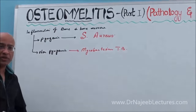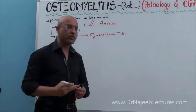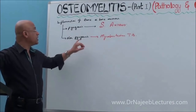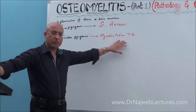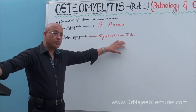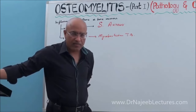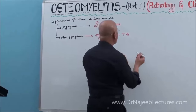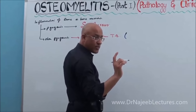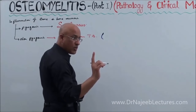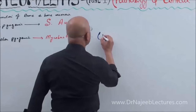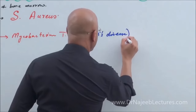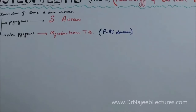The most common organism producing pyogenic osteomyelitis is Staphylococcus aureus, and the most common organism producing non-pyogenic osteomyelitis is Mycobacterium tuberculosis — although fungi can also produce osteomyelitis. When Mycobacterium tuberculosis involves the vertebral spine, the condition is called Pott's disease.